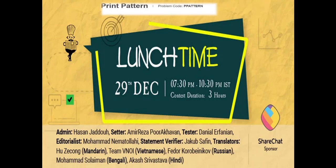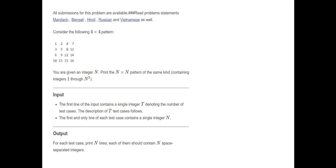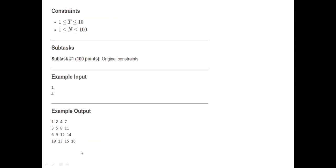Today we will be discussing the December last time print pattern division 2 first problem. The problem considers the following 4x4 pattern — you are given an integer n, print the n cross n pattern of the same kind. The input is t representing the number of test cases and n. The output should print n lines each containing n space-separated integers. The constraint is t lies between 1 to 10 and n lies between 1 and 100. The input was 1, output 4, and this was the given pattern.